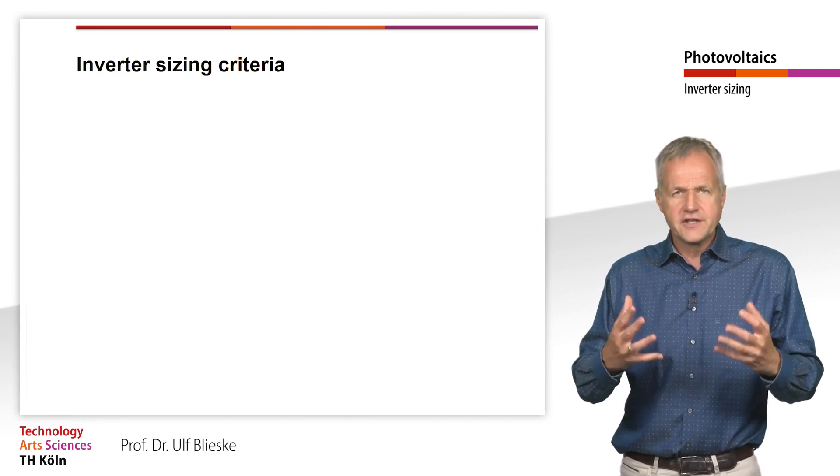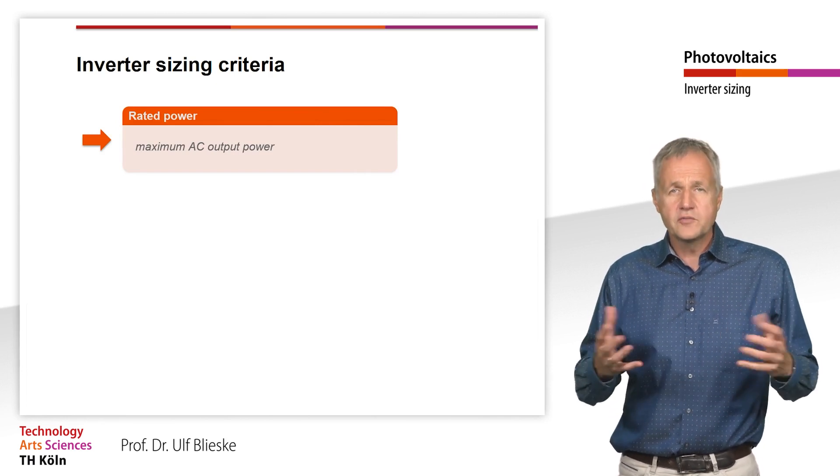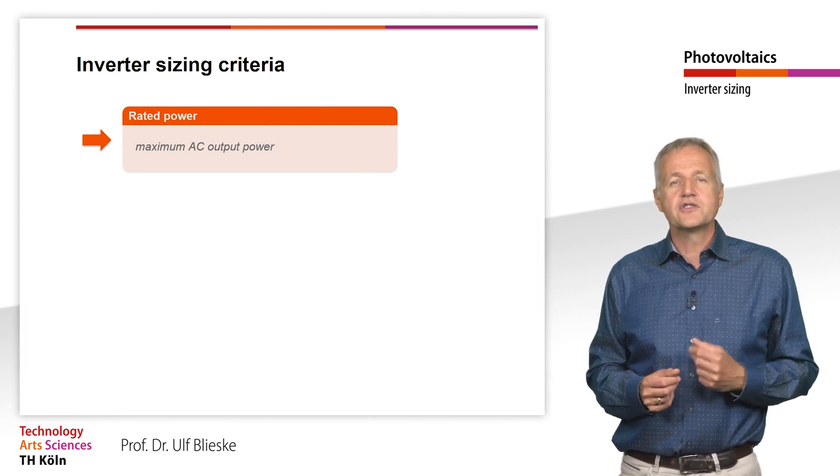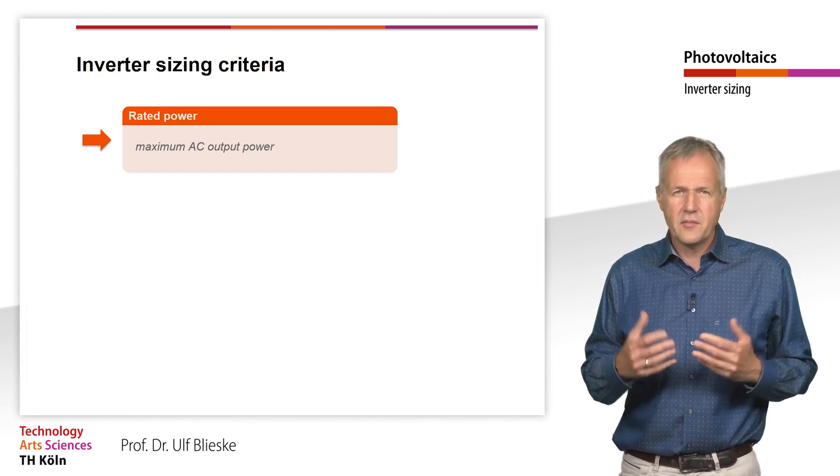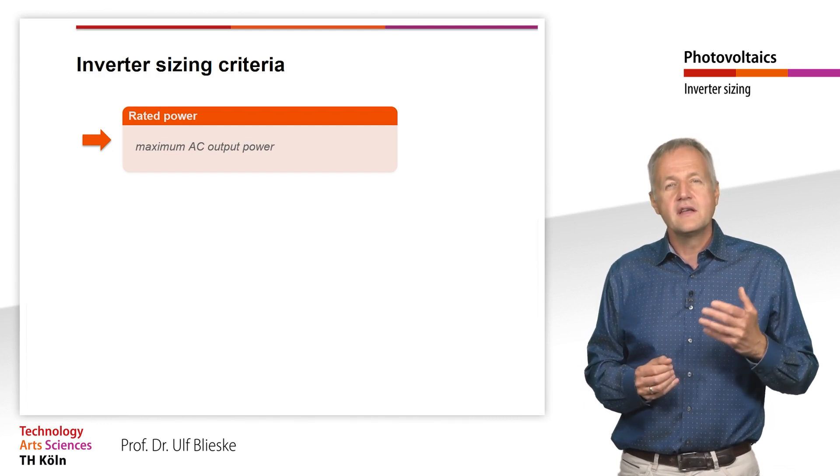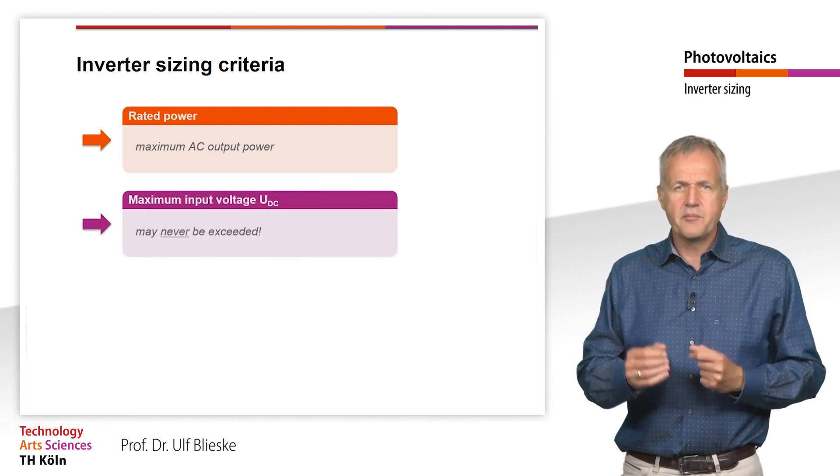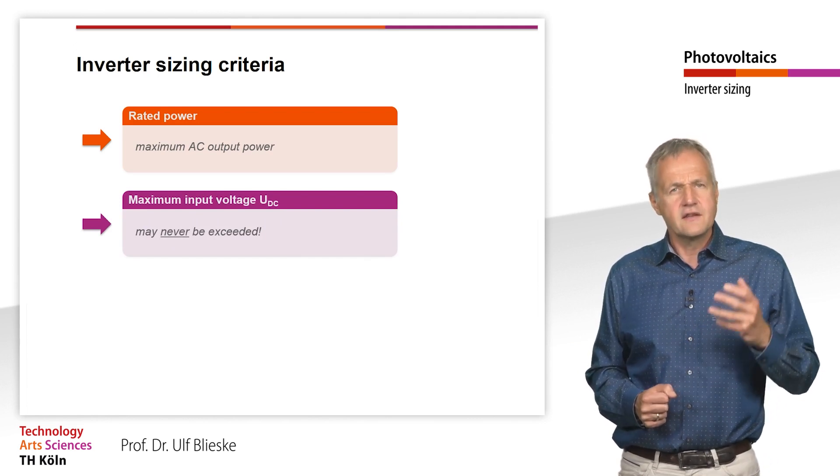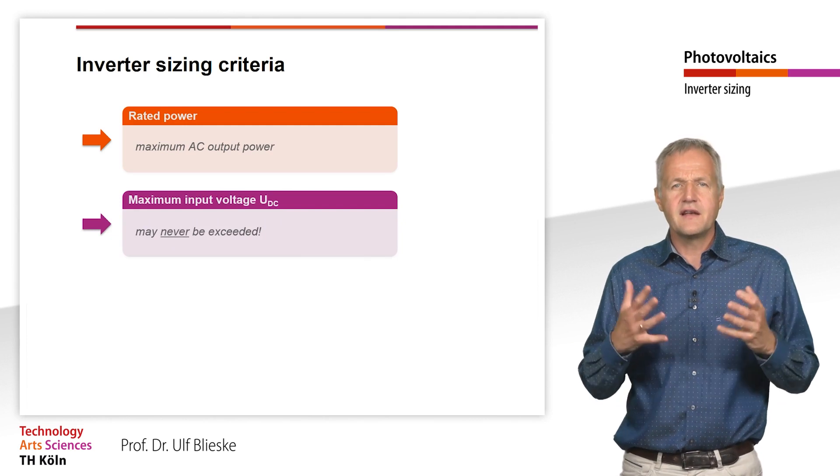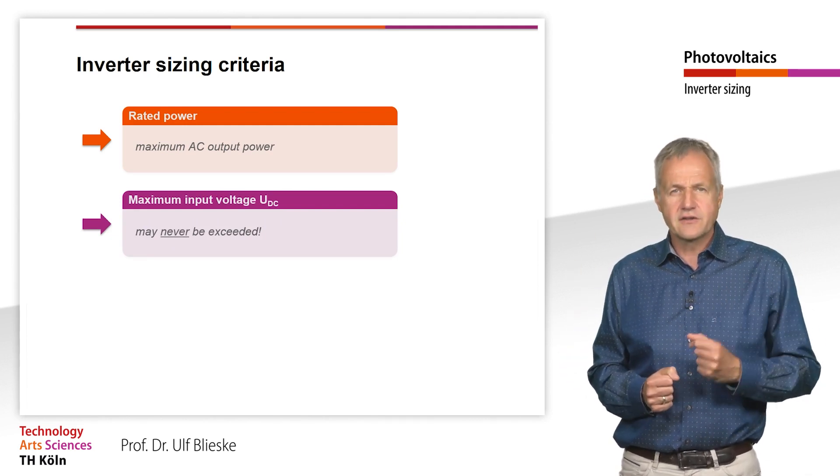First of all, an inverter has a certain rated power. This corresponds to the maximum AC output power that the inverter can deliver. Next, an inverter has a maximum permissible input DC voltage, which must never be exceeded when the system is in operation.